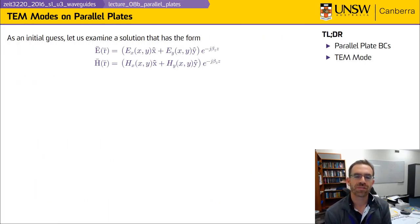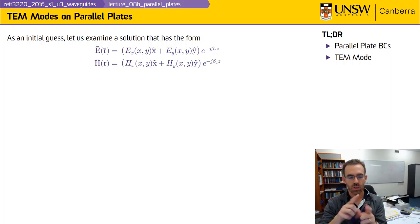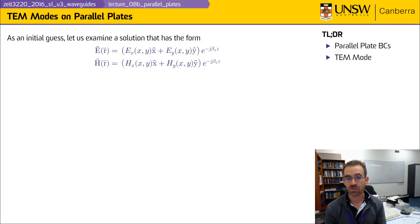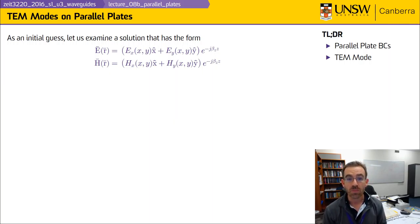We're now going to define something called the TEM, or transverse electromagnetic mode, that will exist on parallel plate waveguides, coaxial waveguides, twisted pair — which are the leads connecting, say, your television antenna to your television set — and a variety of other transmission line geometries. We're going to guess, as you learn in differential equations: the simplest way to solve a differential equation is to guess the answer and verify that it works.